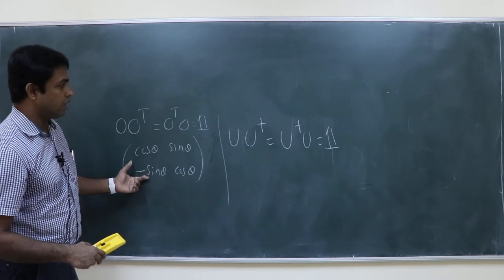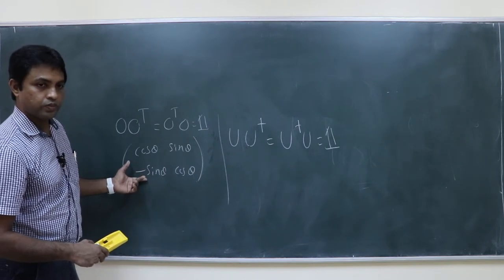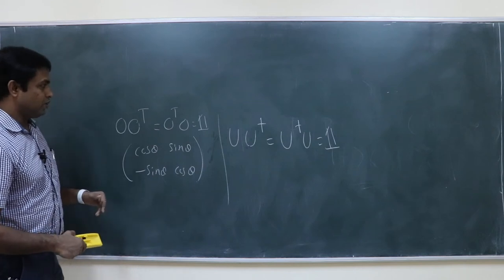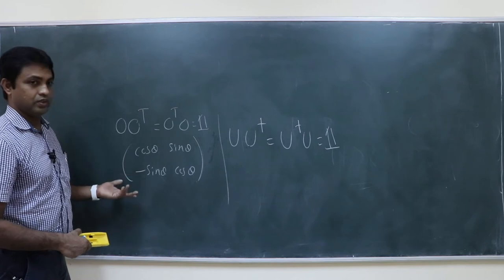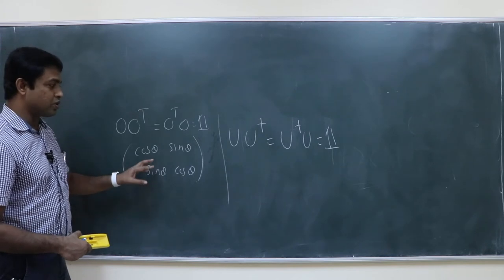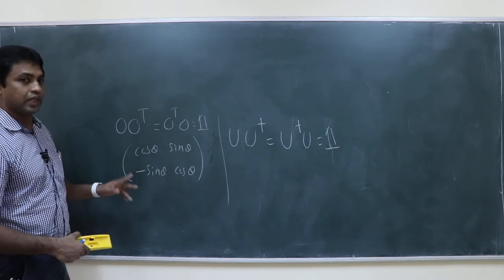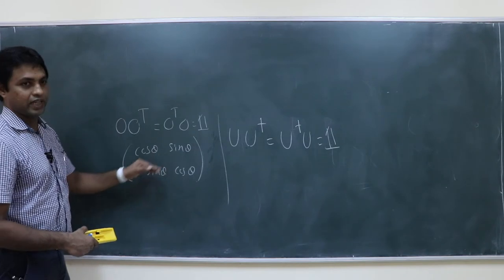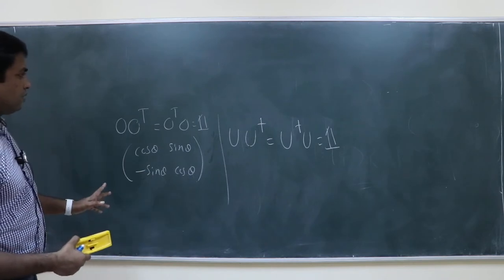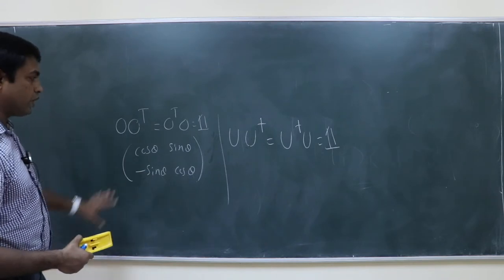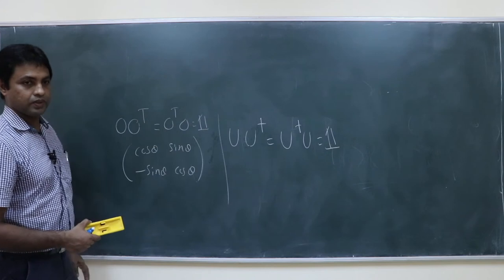The rotation matrix [cos θ, sin θ; −sin θ, cos θ] is an orthogonal matrix, and yes, it is also a unitary matrix. You can introduce complex numbers into it — since taking the conjugate of real cos and sin does not change them — and still satisfy U U† = I.